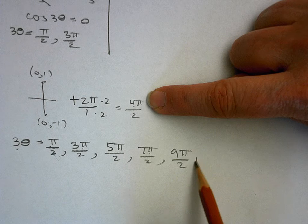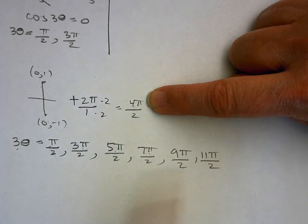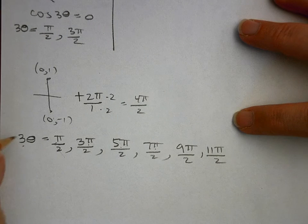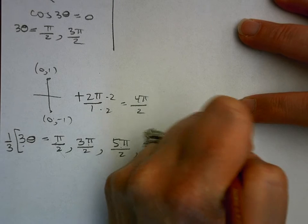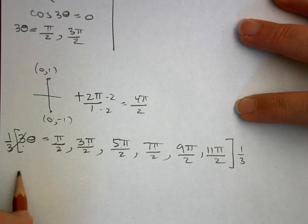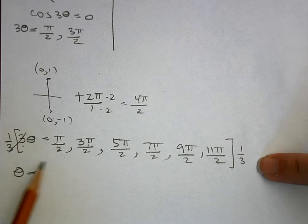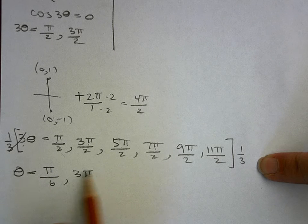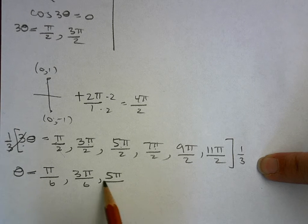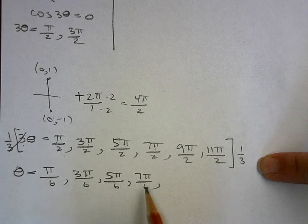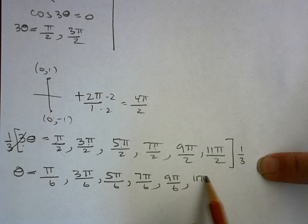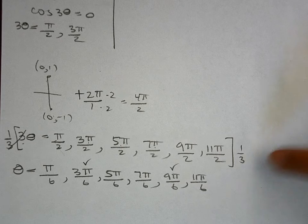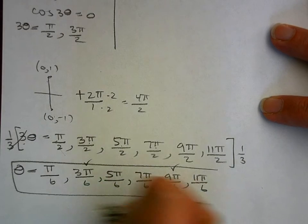Okay, so now all I've done is solve for 3 theta going through the circle three times, and then I actually need to solve for theta though. So I'm going to multiply everything by one third. So all that's going to do is multiply the tops by 1, the bottoms by 3, so all of my denominators are going to turn into 6. And then you can reduce a couple of these, right? So you should go back and reduce both of those, but I will let you do that. So there's part of my answers, right, not all of them, just part of them.